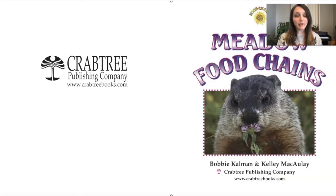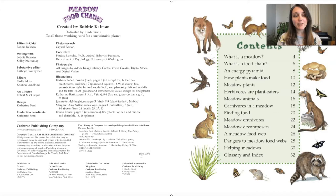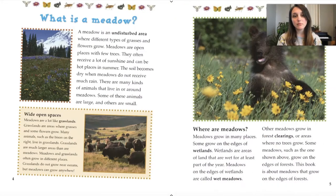Let's read this book I found called Meadow Food Chains by Bobby Kalman and Kelly McCauley, published by Crabtree Publishing Company. For nonfiction books, we can kind of pick and choose whatever we need to get from the book, so I might not read every page. What is a meadow? It says that a meadow is an undisturbed area where different types of grasses and flowers grow. They're open places with few trees, and they get a lot of sunshine and can be hot in the summer.